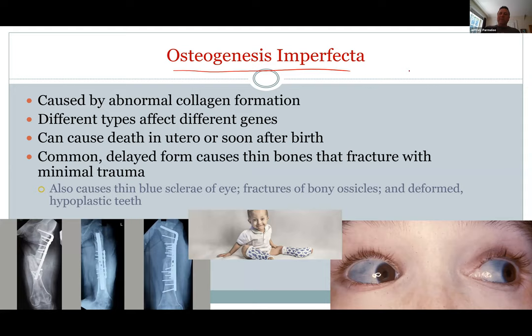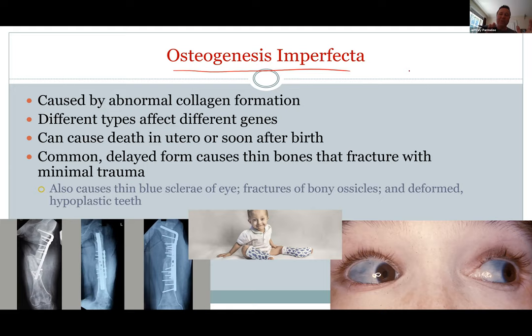Osteogenesis imperfecta means making bone imperfectly. It's a problem with collagen — bones need both collagen for flexibility and hydroxyapatite crystal for strength. If you go one way or the other, your bones are either too bendy or too brittle. This condition is the too-brittle version. The collagen is needed so bones have some flexing — without it they break easily. There are many different genes and various forms. Often what happens is these children have broken bones and can't be allowed to play rough sports.